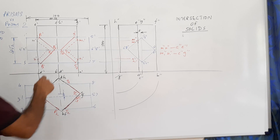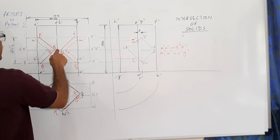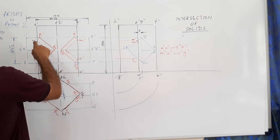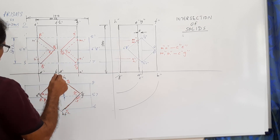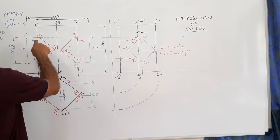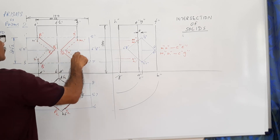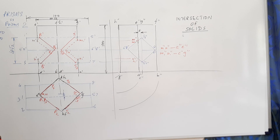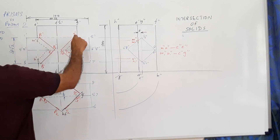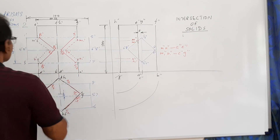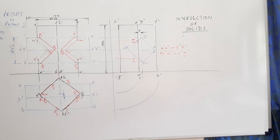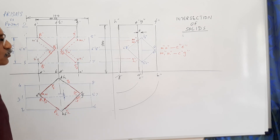As a result, certain lines become dotted in the elevation - this will become dotted, this will become dotted, this will disappear, and this small portion will also be dotted. This is the intersection curve in the elevation.